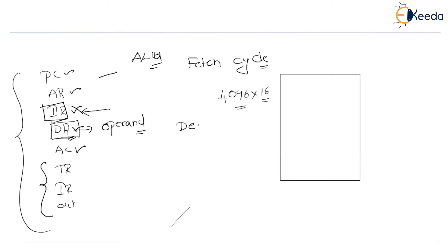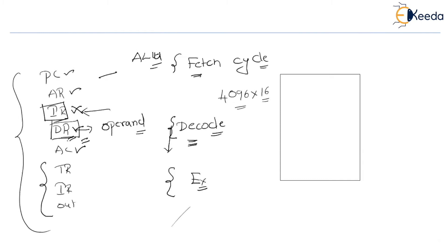After the fetch cycle, there comes a decode phase. During the decode phase, the instruction opcode will get decoded. After the decode phase, we don't require the instruction to be available within the CPU because the instruction has already been decoded. The operations are already interpreted. So during the fetch and the decode phases, the data register acts as an instruction register. During the execution phase, the data register acts as the data register which stores the actual operand, because after the decode phase the operations are already interpreted and we know what ALU operation is to be performed.